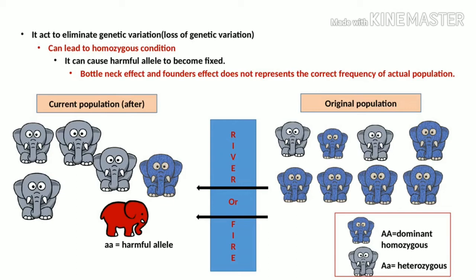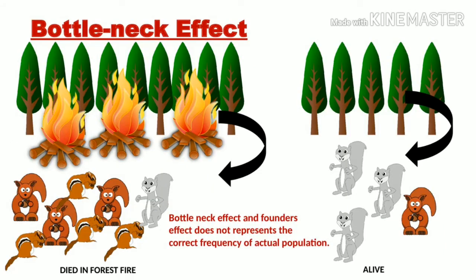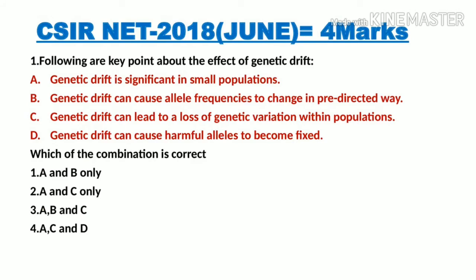The red elephant carries the harmful allele, and there is a high probability this harmful allele will be transferred to offspring whenever it interbreeds with other elephants in the population. Finally, both bottleneck effect and founder's effect do not represent the correct frequency of the actual population — both are responsible for not showing the correct genetic makeup of the original population. Now it's time for the question-and-answer session.